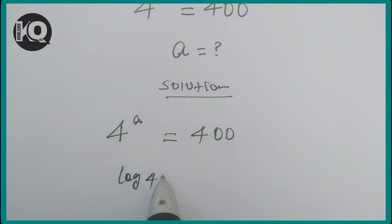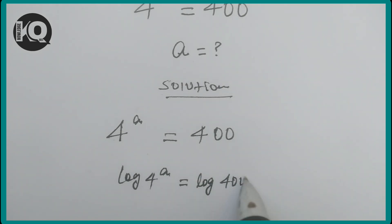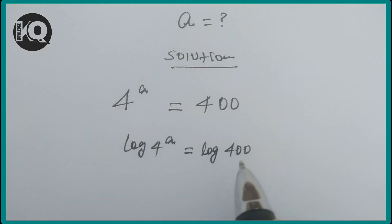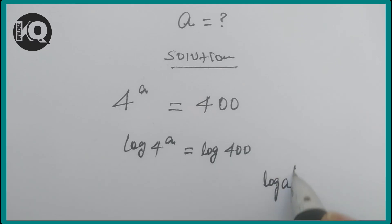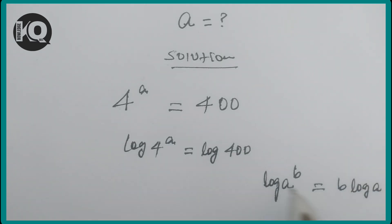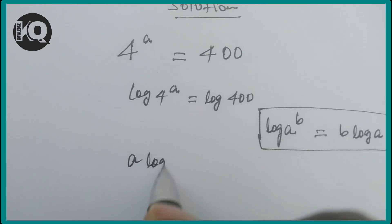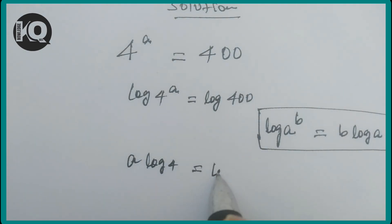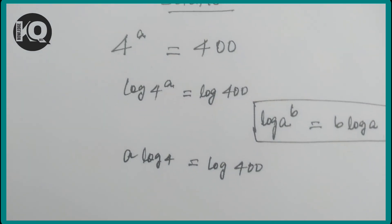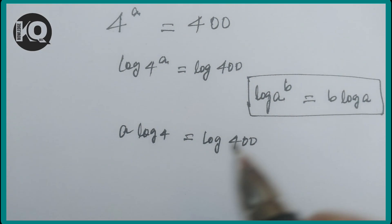Taking log of both sides: log(4^a) = log(400). We know that log(a^b) = b times log(a), so applying this rule, log(4^a) becomes a times log(4), which is equal to log(400).